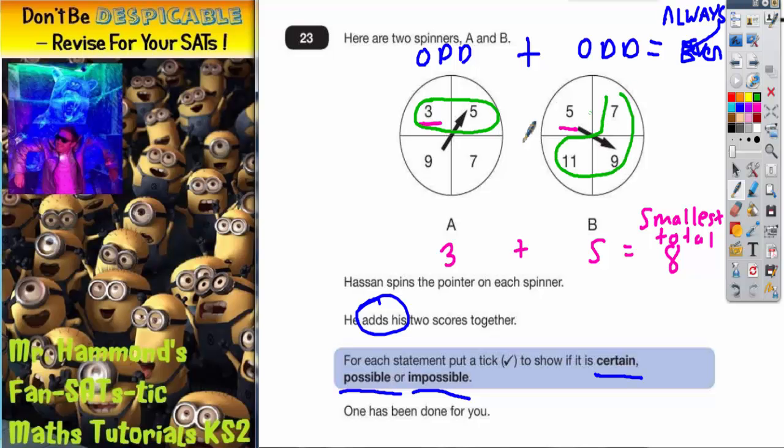So it is possible, but is it always the case? If we can find one exception where A is not less than B, then it's not completely certain. Well there is an exception right here. If we get 5 on spinner B, that's less than 7 or 9 on spinner A. So it can happen, it is possible, but it's not certain.